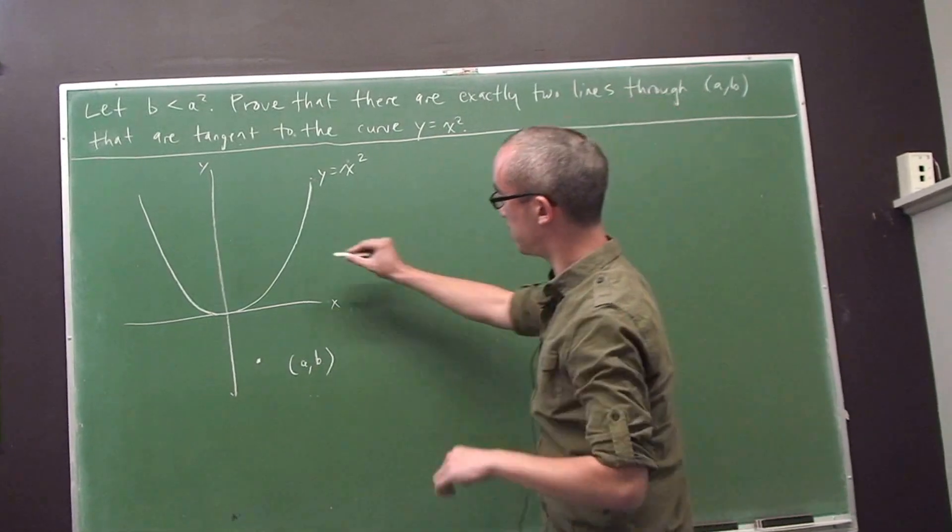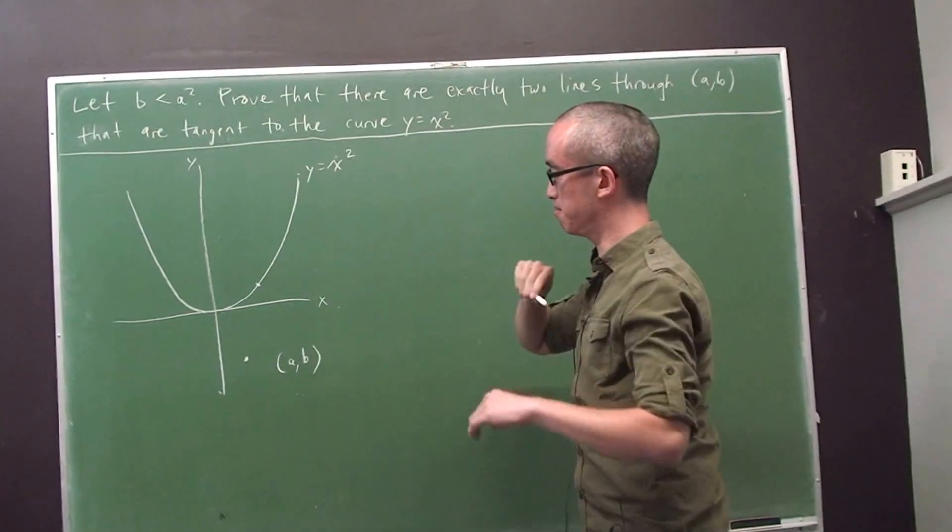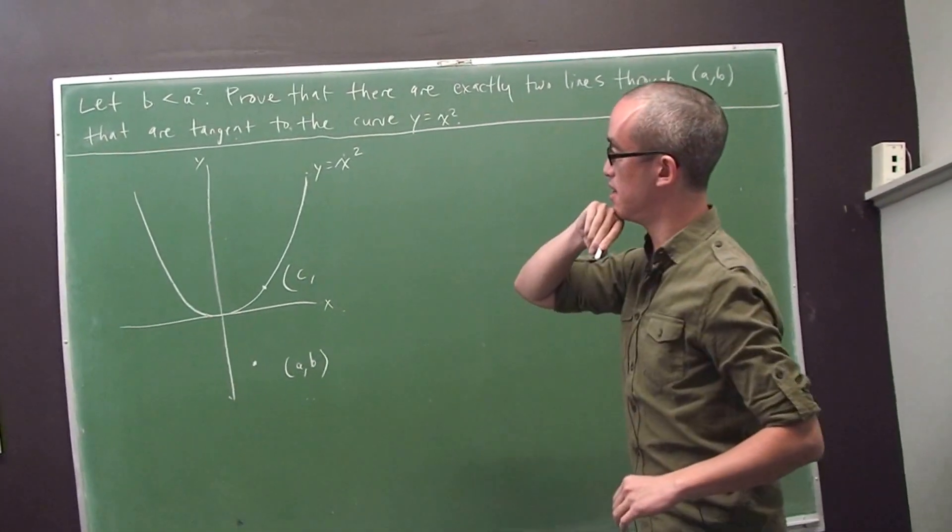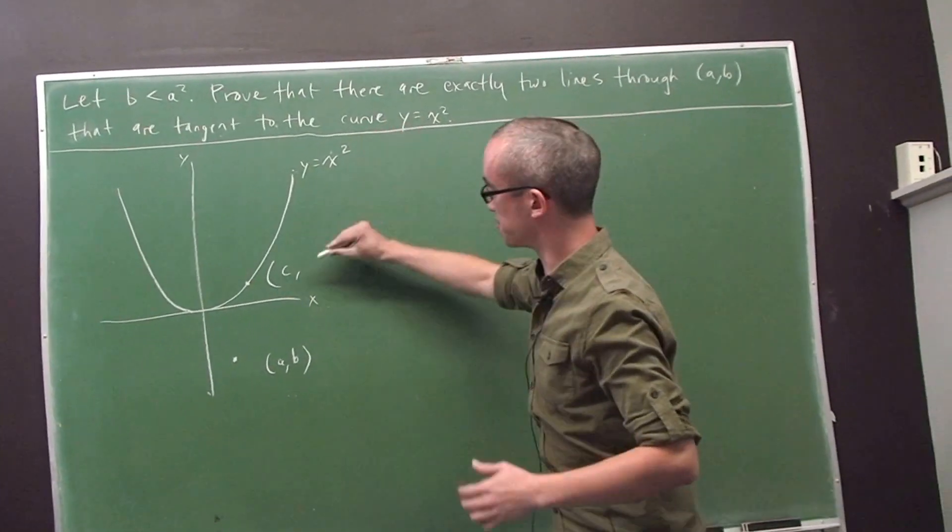So what I'm going to do is take a generic point, a point at random on the parabola. If that point has x value c, then its y value is the square of c. It's c squared.